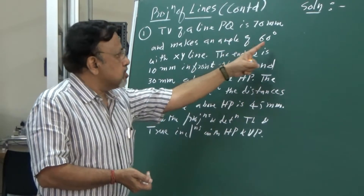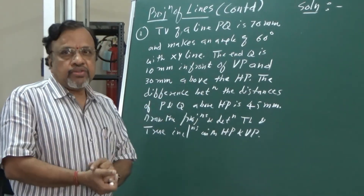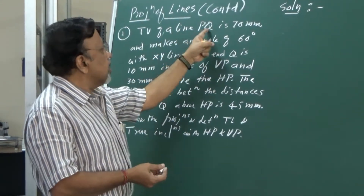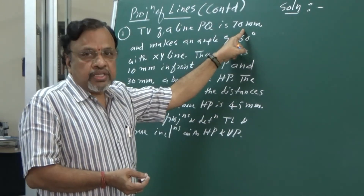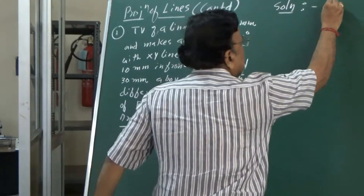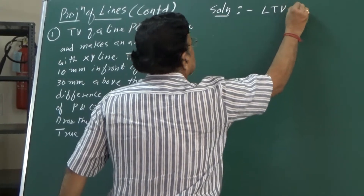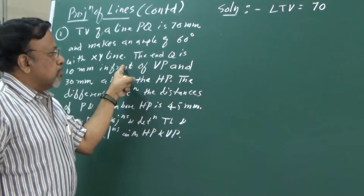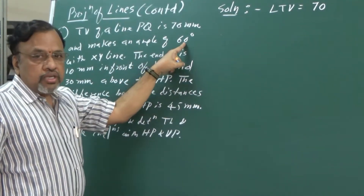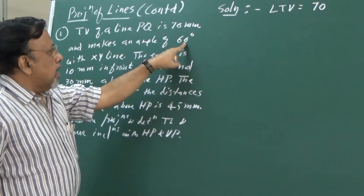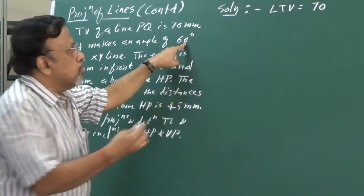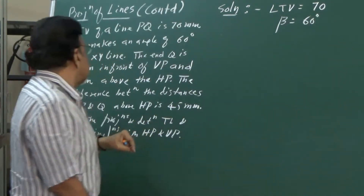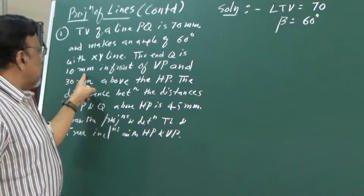The top view of line PQ is 70 mm and makes an angle of 60 degrees with XY. Since the length given is the length of the top view (not the true length), and the angle it makes with XY is an apparent angle, this apparent angle in the top view is indicated as beta. So beta is given as 60 degrees. End Q is 10 mm in front of VP.